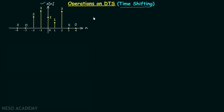Looking at this waveform, it is clear that drawing it every time is not required. We are simply writing down the values of Xn for the corresponding integer values of n. The waveform of a discrete time signal is different from that of a continuous time signal. In continuous time signals we have continuous variation, but here we only have values at discrete intervals of time, so there is no need for the waveform to analyze this signal.